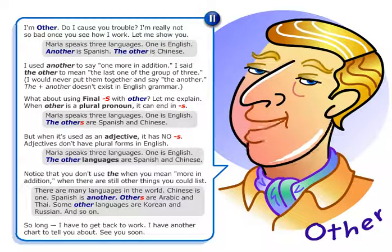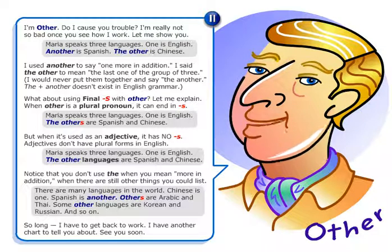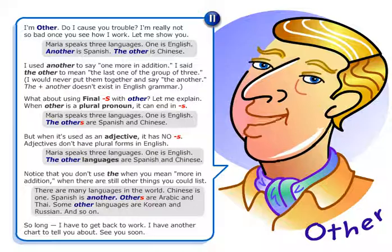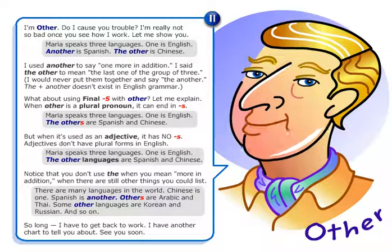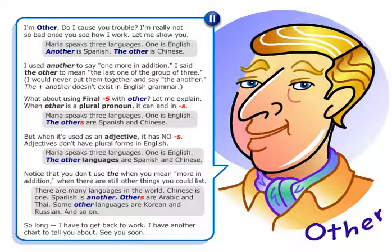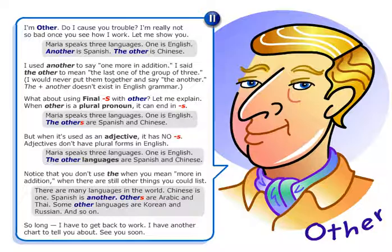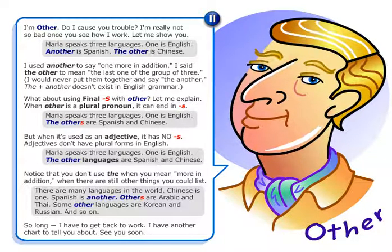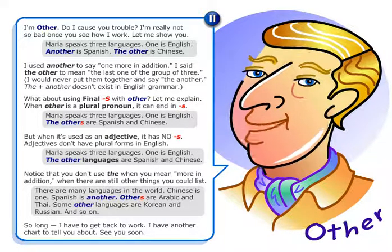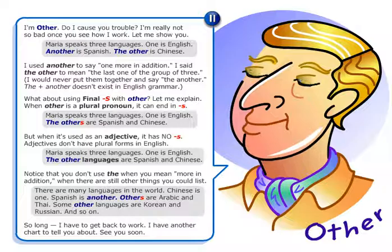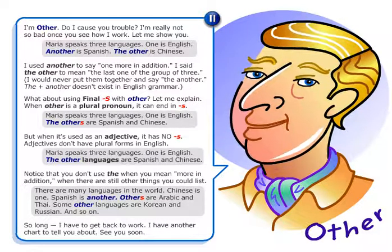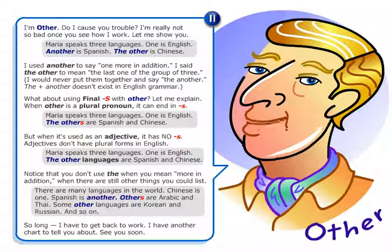Notice that you don't use 'the' when you mean 'more in addition' — when there are still other things you could list. There are many languages in the world. Chinese is one. Spanish is another. Others are Arabic and Thai. Some other languages are Korean and Russian, and so on.